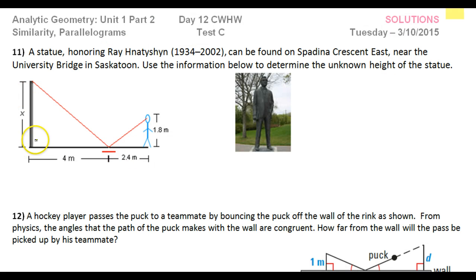We have a statue and a person, and this is a mirror. They're looking down at the mirror, seeing the top of the statue. This is a technique to use to indirectly measure the height of something that's very tall because it creates similar triangles. These two angles will always be congruent.